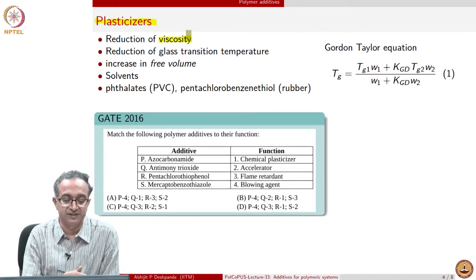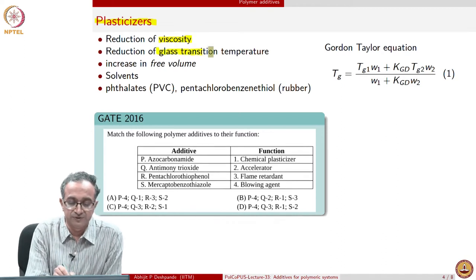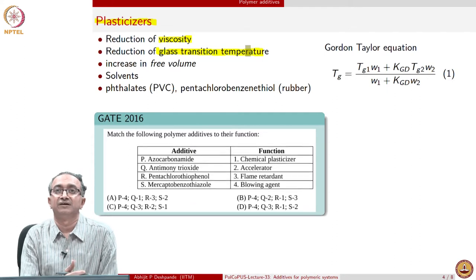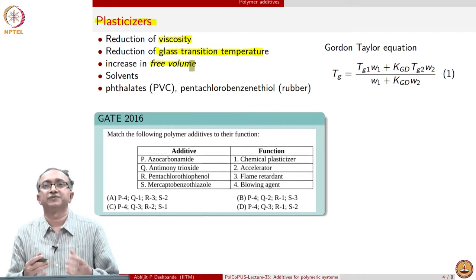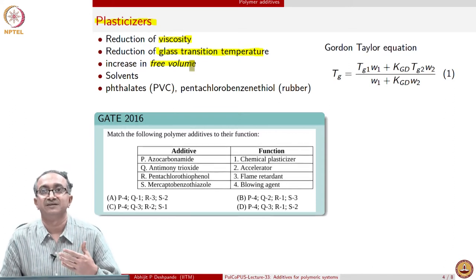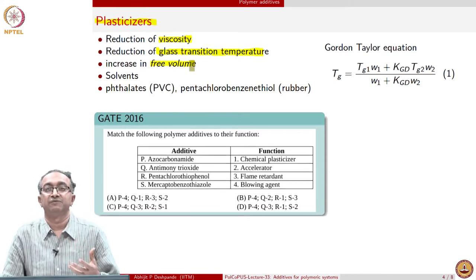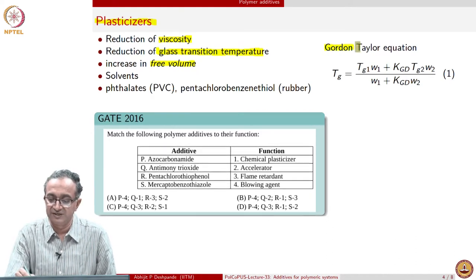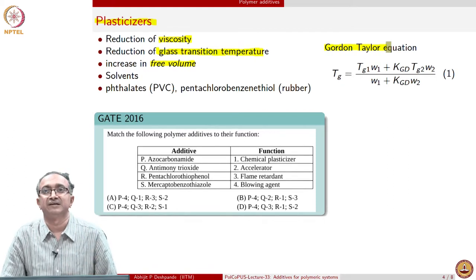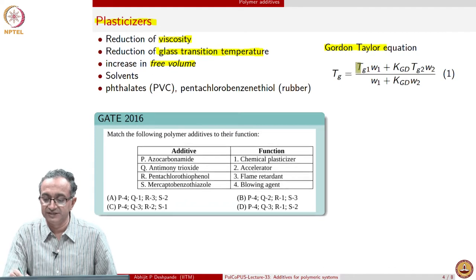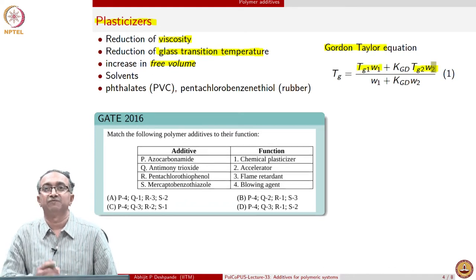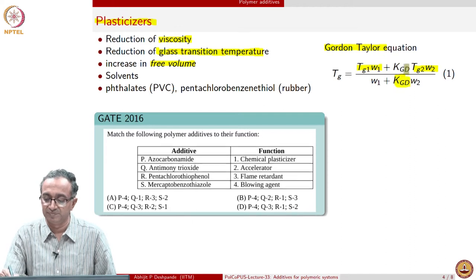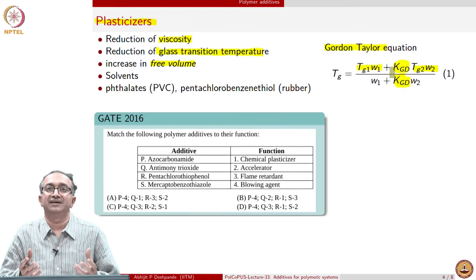What a plasticizer does is reduce viscosity, which is useful for processing, but it also reduces the glass transition temperature, which is relevant when we need to manipulate Tg in a performing formulation. This can be rationalized in terms of free volume theory: the plasticizer increases free volume, and because free volume increases, the glass transition temperature goes down. The Gordon-Taylor equation is one semi-empirical equation available, which finds that if you have glass transition temperatures of two species added in two different weight fractions W1 and W2, then knowing the Gordon-Taylor parameter K, we can find the glass transition of the plasticized polymer.